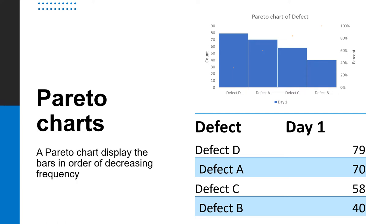A Pareto chart displays the bars in order of decreasing frequency. The line shown in red represents the cumulative frequency. Each point on the line represents the total frequency of each category plus the frequencies of all categories that came before it.